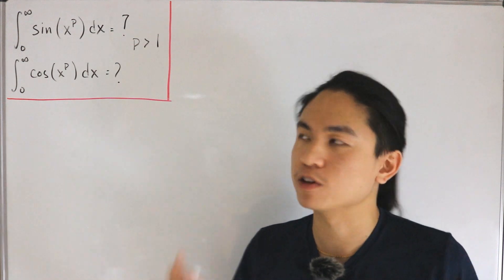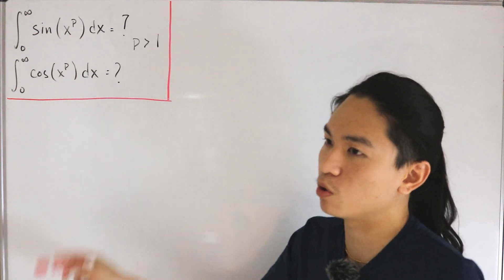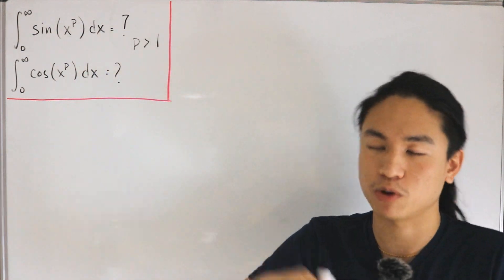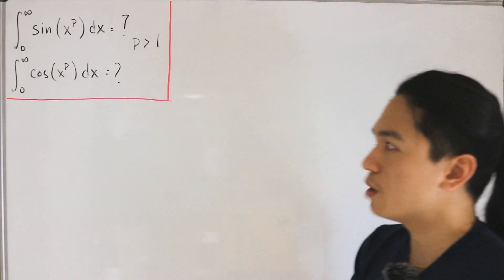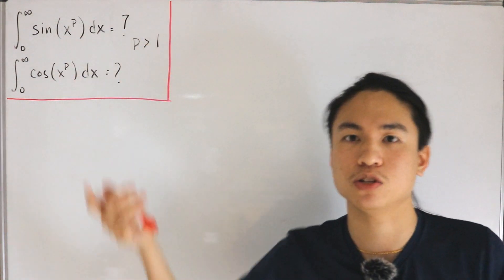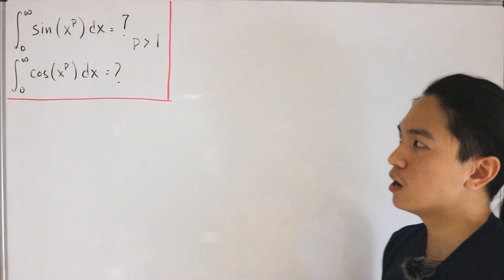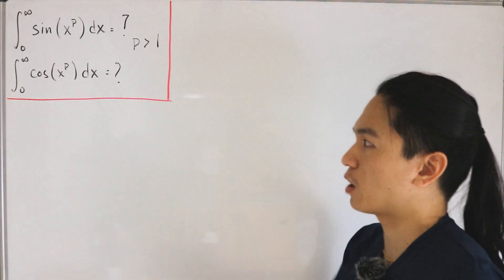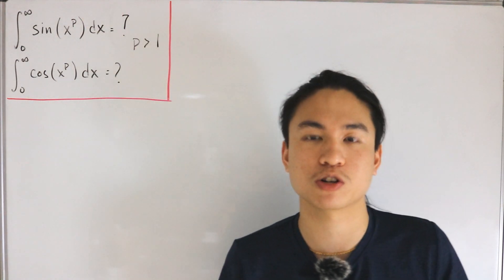The form here is not the standard definition: by definition, the Fresnel integrals are defined from zero to x of cosine(t²) dt and sine(t²) dt. Here we're taking the limit as x approaches infinity, with a parameter p strictly greater than one for the exponent x^p. There's also a special case I did a video on where p equals two, and the two integrals are actually equal to each other.